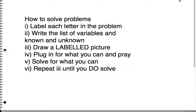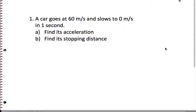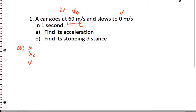This is the recipe that we actually follow to solve equations, and I'm going to be using each of these to solve all the problems on this worksheet. So, first question: we have a car that goes 60 meters per second and slows down to zero meters per second in one second. We want to find the acceleration and stopping distance. Step one: let's label all our letters. That's V-naught, and that's V-final.